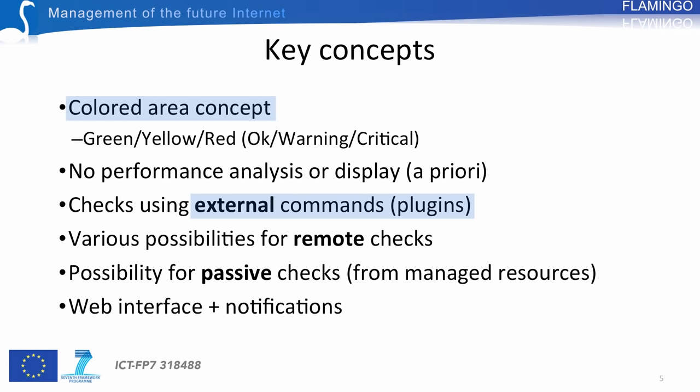It is also possible to perform passive checks. The concept is very similar to the concept of SNMP traps. In that case, the Nagios server does not periodically request agents to get the status, but agents only report alerts when a certain event happens. Administrators interact with Nagios through the web interface, but also through notifications sent when the status of services changes.